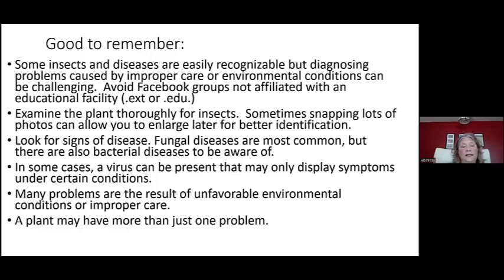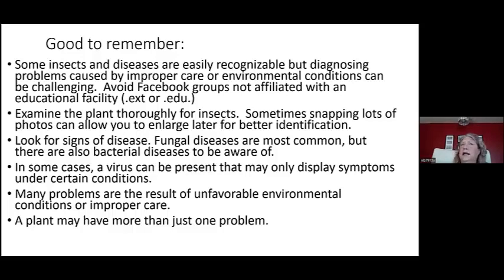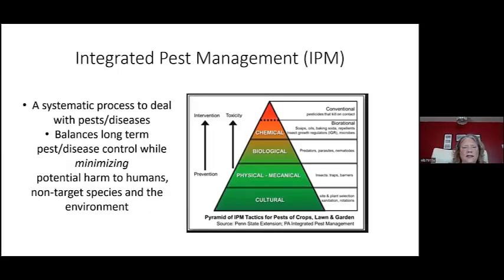Many of the problems we see result from improper planting, improper care, the wrong plant in the wrong place, or an unfavorable environmental condition. We've really had that this summer — all of a sudden a lot of rain, then scorching hot weather with wind that desiccates plants. Remember, a plant can have more than one problem. Integrated pest management — thanks to this Penn State Extension slide — is a process to deal with pests and diseases. It involves scouting, finding all available options, and choosing the least toxic alternative with minimal or no potential harm to humans or non-target species.